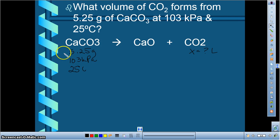Form from 5.25 grams of CaCO3 at 103 kPa and 25 degrees Celsius. So we have grams, we have pressure, and we have temperature. So the first thing that we're going to do is look at a relationship between the CaCO3 and CO2 as far as how many moles can be produced.